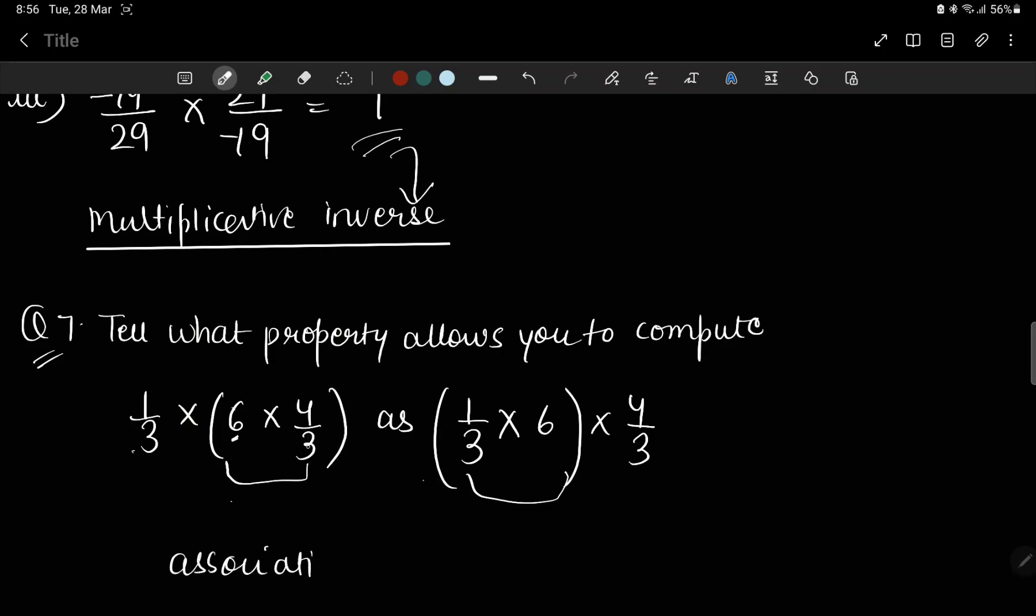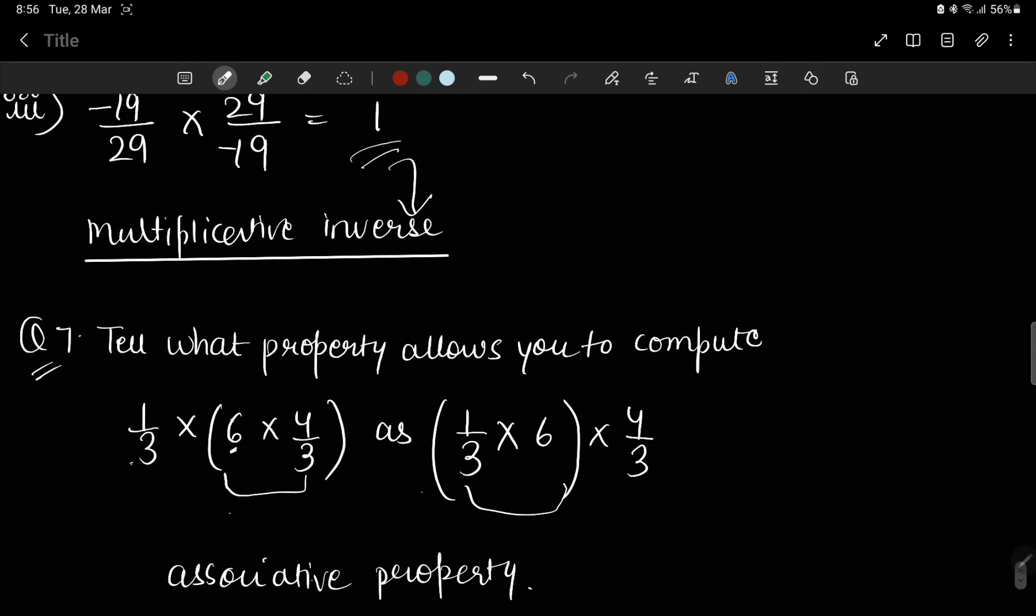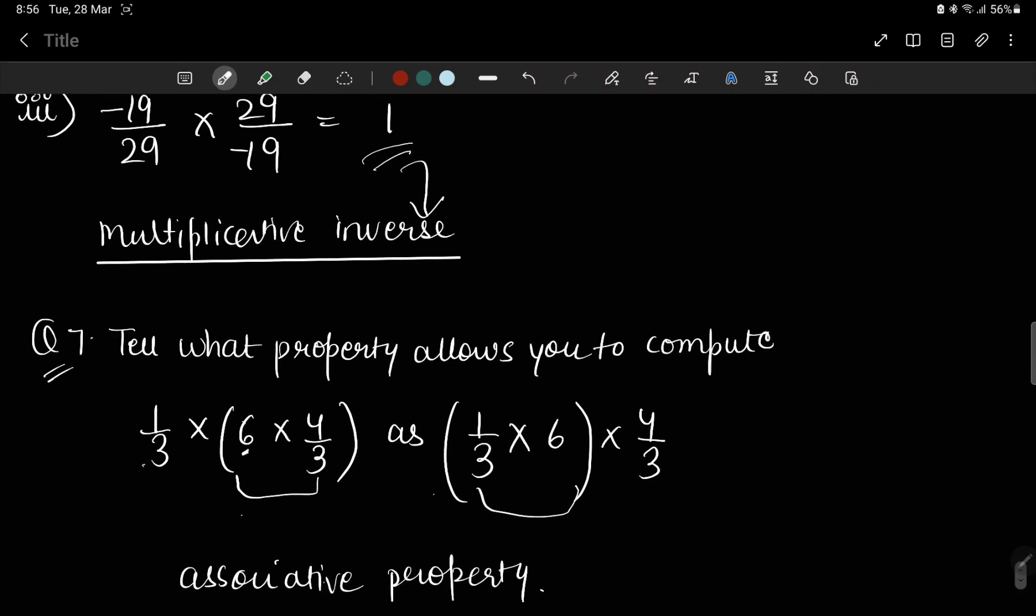It will be associated because it will become association. The first was associated with this, now who has it? The first 4 by 3 was associated with 6. Now it is 1 by 3. Without any doubt, associative property. Okay, this was the last question. So thank you so much.